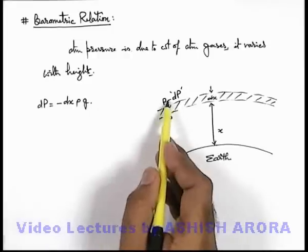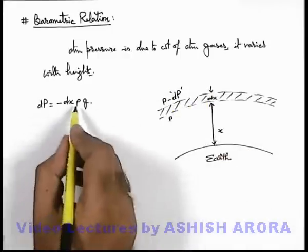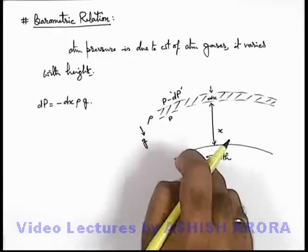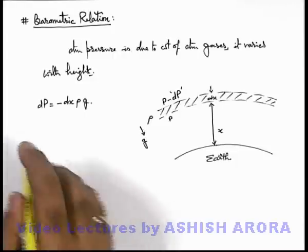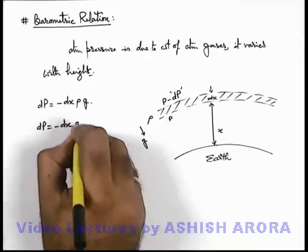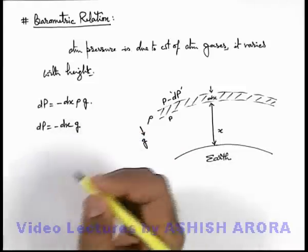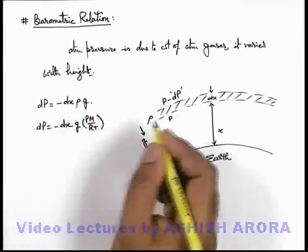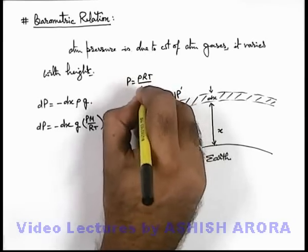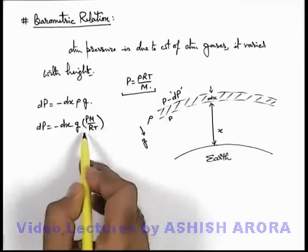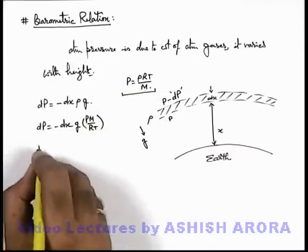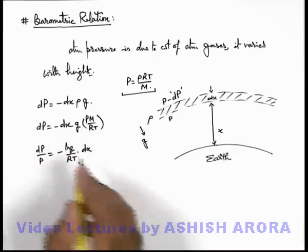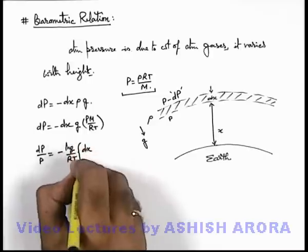We can write dp as minus ρg dx. We take this as negative because pressure is reducing as we increase the height. Here ρ is the density of atmospheric air within this layer and g is the acceleration due to gravity. Rearranging this, dp = -ρg dx, and the density can be substituted using the density form of the gas law: ρ = pM/RT. Substituting this, dp/p = -(Mg/RT) dx, where Mg/RT can be considered as constant.